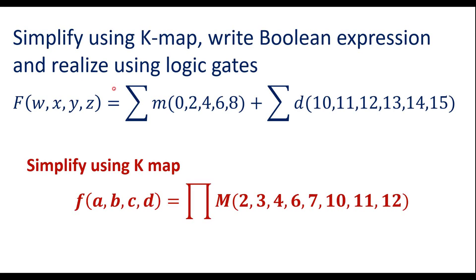In this video, I will consider two examples on kmap. Simplify using kmap, write boolean expression and realize using logic gates. This is the given function, that is a min term function. We need to simplify this using kmap, get the boolean expression, and realize using logic gates.